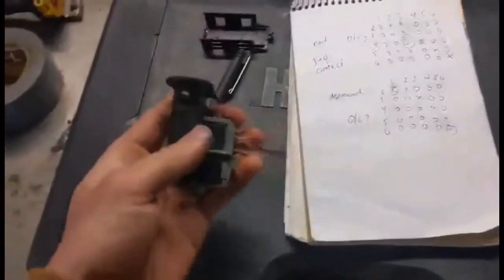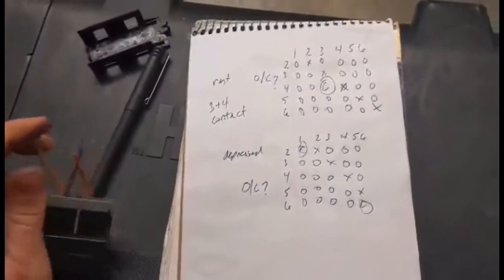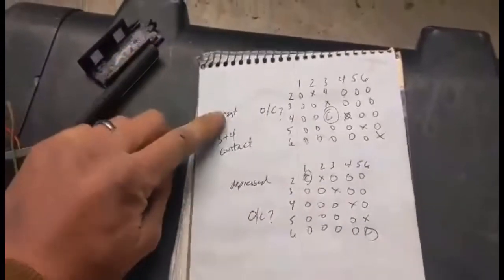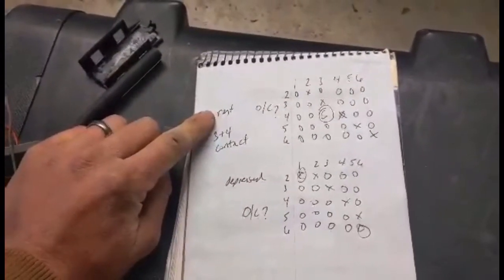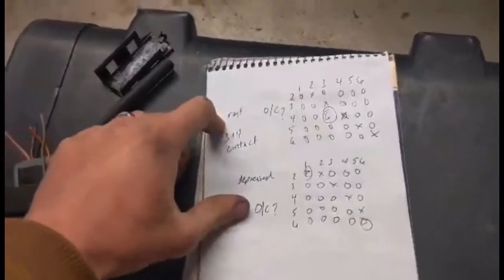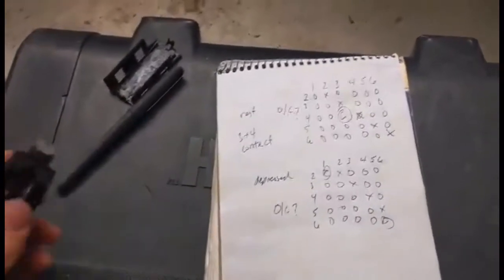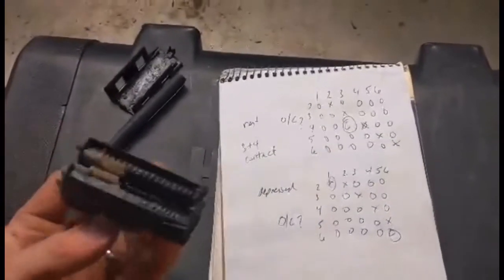So I checked it out with the voltmeter and I made this little diagram here. This top column is when the clutch is in the resting position, not depressed, and then this bottom is when the clutch is in the depressed position. So I just took an ohms meter and tested the switch.